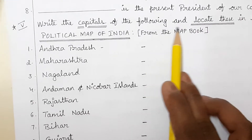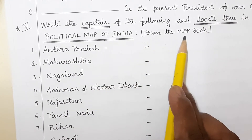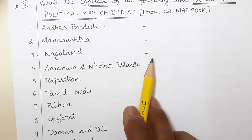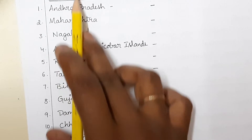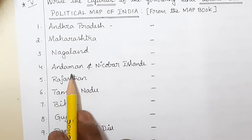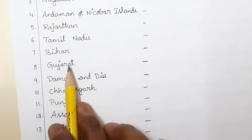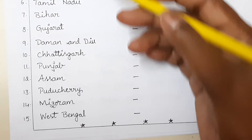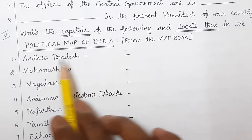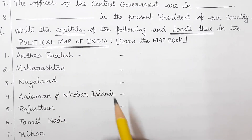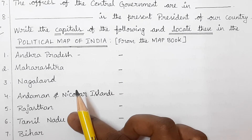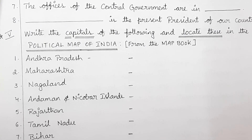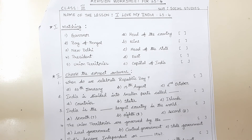Next: write the capitals of the following states and locate them in the political map of India from your map book. Tear one states-and-capitals map. Write down these answers in the homework book, then locate the same 15 items: Andhra Pradesh, Maharashtra, Nagaland, Andaman and Nicobar Islands, Rajasthan, Tamil Nadu, Bihar, Gujarat, Daman and Diu, Chhattisgarh, Punjab, Assam, Puducherry, Mizoram, and West Bengal. Point them out in the political map in your map book.